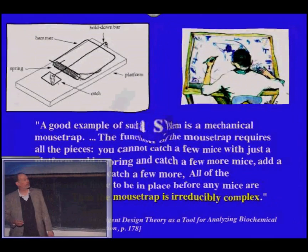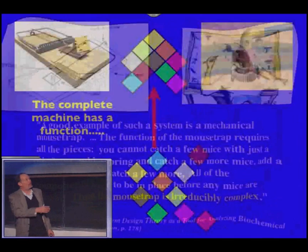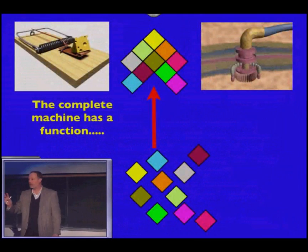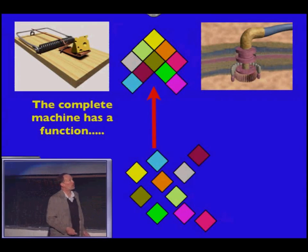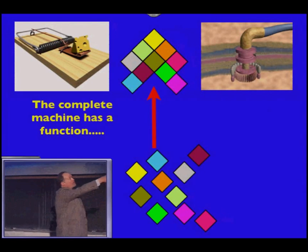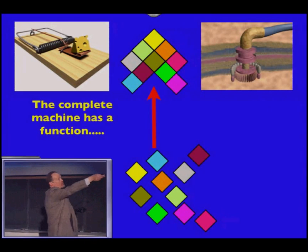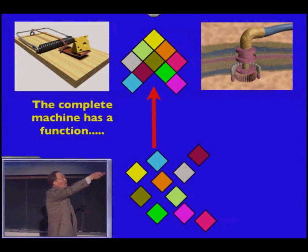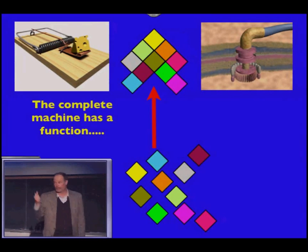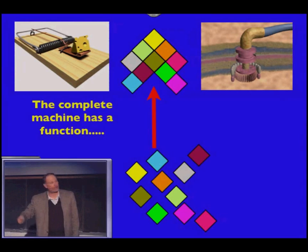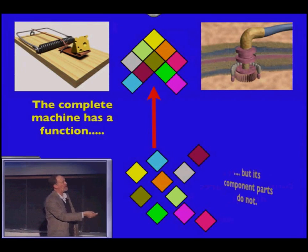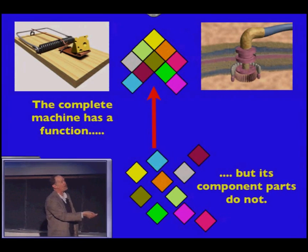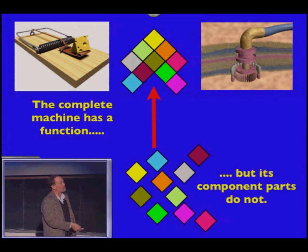Bringing this back to the flagellum, here's a diagram that illustrates the argument. These are multi-part machines, both the mousetrap and the flagellum. When all the parts are together, the machine works. But the individual parts that make it up do not have functions of their own.